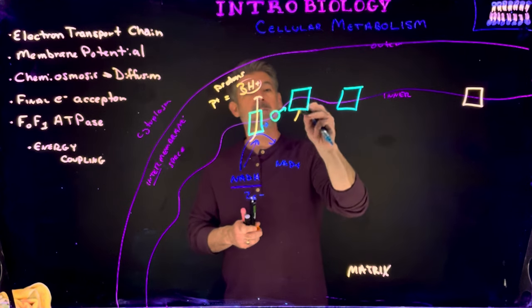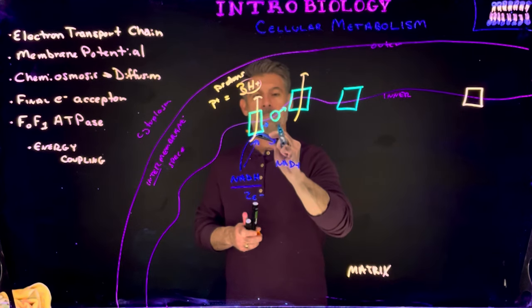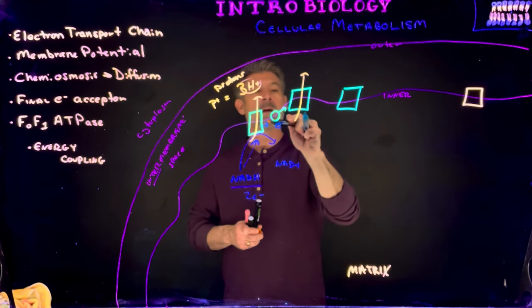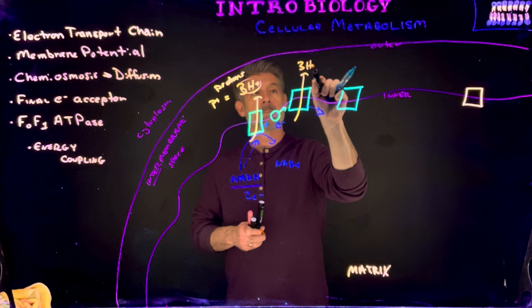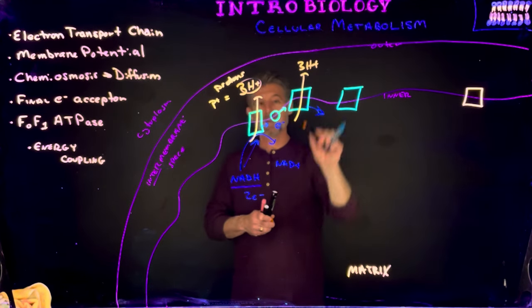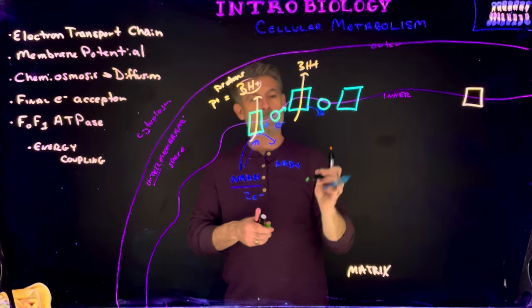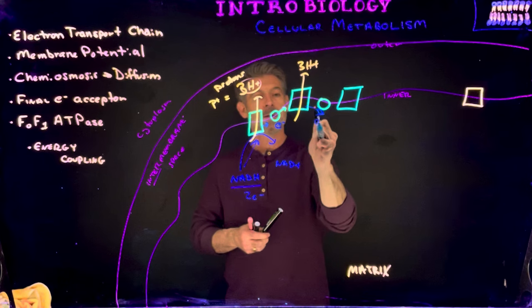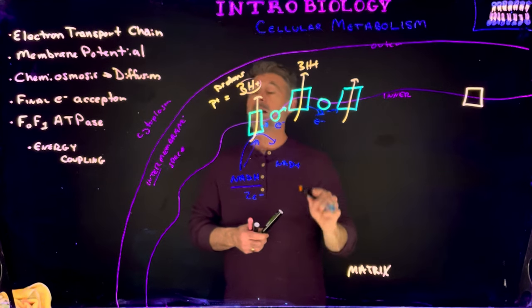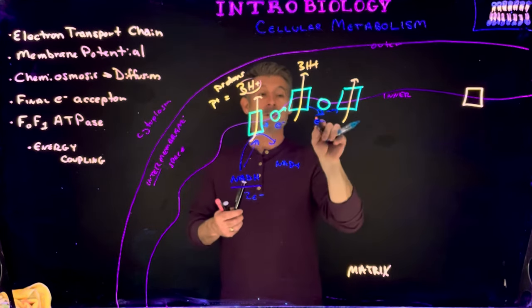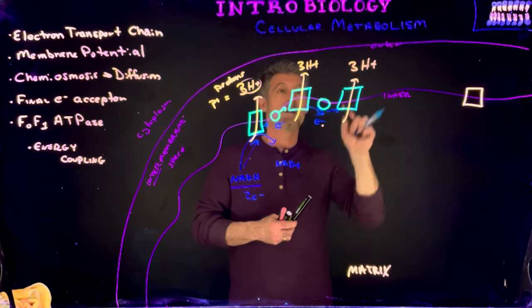That protein will do the same thing as this one. It's going to take the electrons and use the energy from the electrons as it passes them along to pump three more protons from this space into that space. And then there's going to be something in between here, another intermediate molecule, that's going to pick up the electrons from this protein and give them to a third protein. And that third protein is going to do the same thing. It's going to use the energy from the electrons to pump three hydrogen ions or protons into that space.